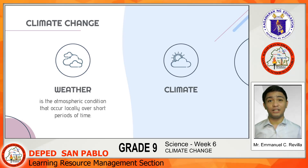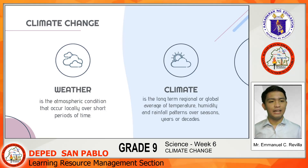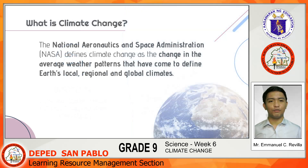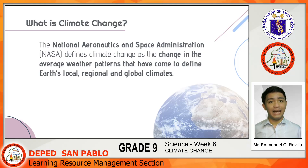Weather refers to the short-term condition of the atmosphere, which may vary or change within minutes to hours or days. On the other hand, when we speak of climate, it refers to the long-term average weather condition, or the average temperature, humidity, and rainfall patterns experienced by a place over the years or even decades. So going back to the definition of climate change, it refers to the change in the average weather patterns that an area usually experiences — conditions becoming warmer or drier than usual, or wetter than usual due to occurrences of untimely rainfall.